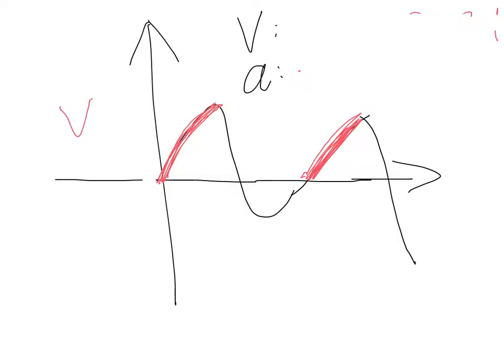There is another case of speeding up here. In this region, the velocity is negative because it's below the x-axis, and the acceleration is also negative. In this case, the object is also speeding up.